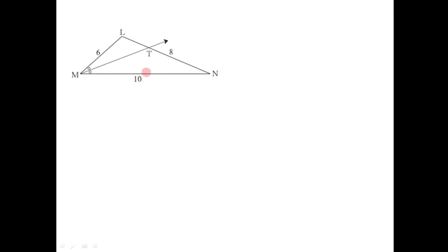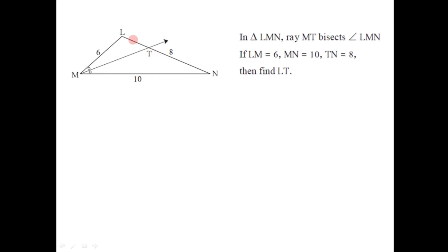Let us have another problem, again based on this diagram. In triangle LMN, ray MT bisects angle LMN. Here LM is given to be 6, MN is 10, and TN is 8. From that, we have to find LT. Ray MT is the angle bisector, so we will use the angle bisector property.